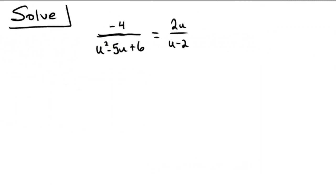Okay, let's solve these rational equations this time. We have negative 4 over u squared minus 5u plus 6 equals 2u over u minus 2.